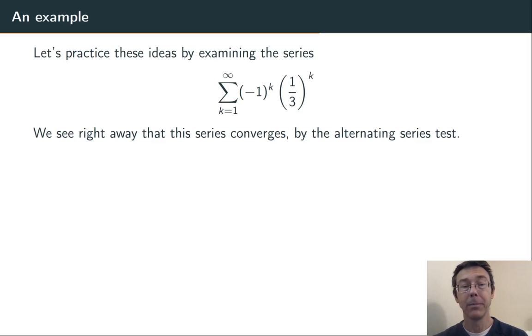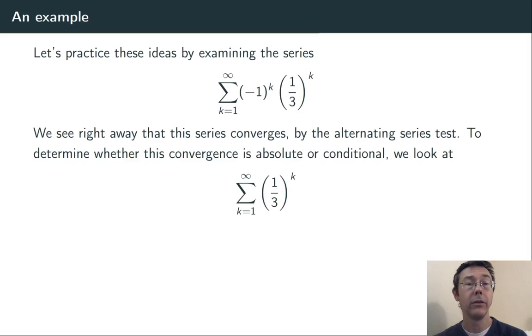Clearly, it's alternating, and the general term, (1/3)^k, is both decreasing and heading towards zero. Is it conditionally convergent, or absolutely convergent?